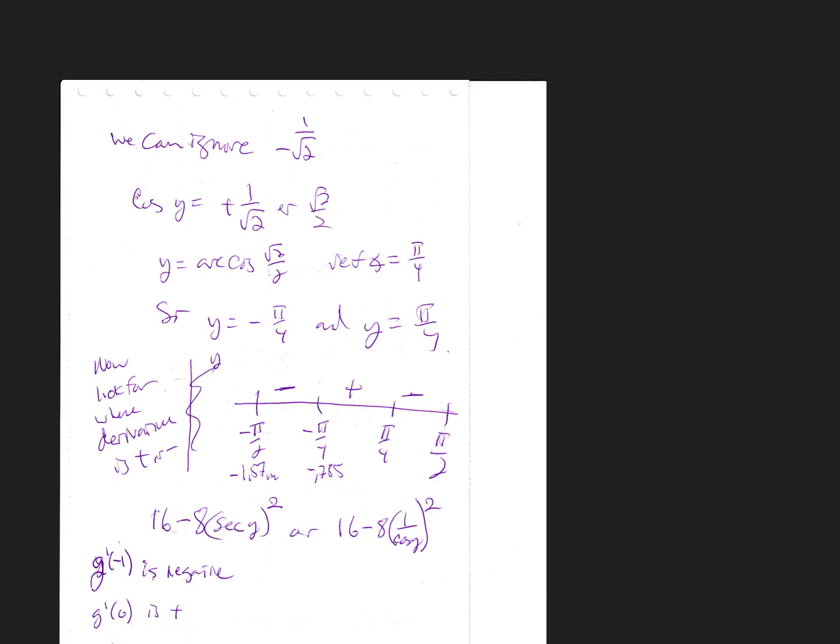So we don't have to worry about the negative 1/√2. We only want positive 1/√2 or √2/2. So cosine y equals positive √2/2. Since this is π/4 or 45 degrees on the unit circle, these coordinates are √2/2 and √2/2, and down here √2/2 and -√2/2. So the angles we're concerned with are -π/4 and π/4. Those are the critical values, and we also have the endpoints.